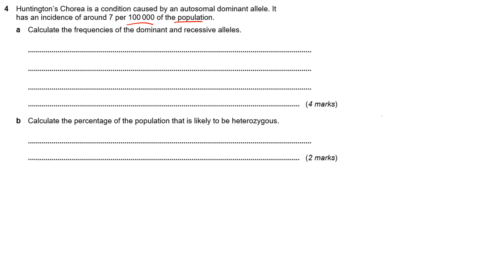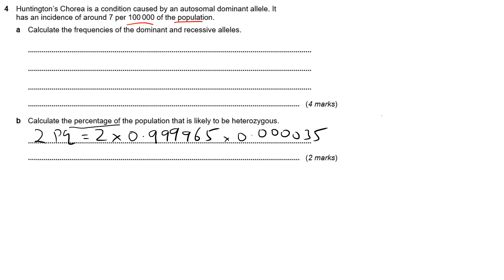If we're calculating the percentage of a population that is likely to be heterozygous — that's our 2PQ. Which is 2 times P times Q. If you've done your working out correctly, you should see P and Q clearly in your previous answer. Looking across my calculations, my value for Q is 0.999965 and my value for P comes out at 0.0000035. When you punch that into a calculator, it gives you the value for 2PQ.